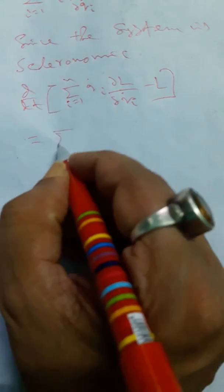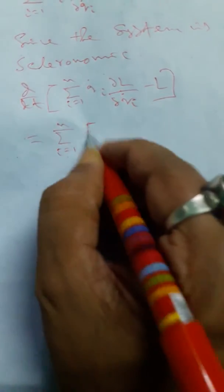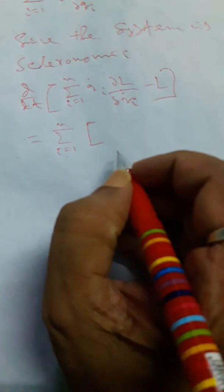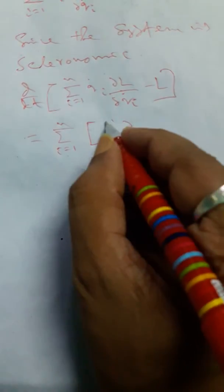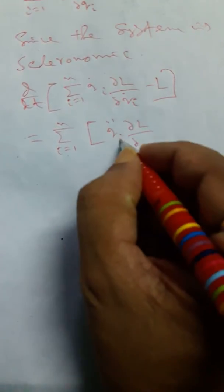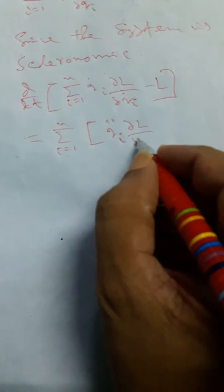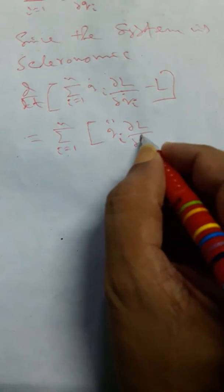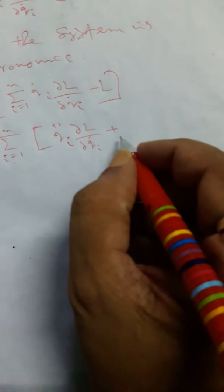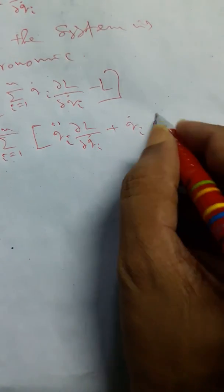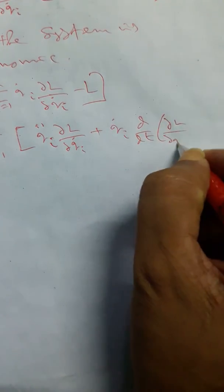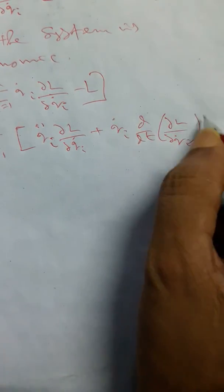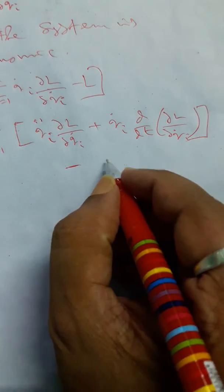We get summation from i equals 1 to n of q-double-dot-i times (∂L/∂q-dot-i), plus q-dot-i times d/dt(∂L/∂q-dot-i), minus dL/dt. And it is obvious that for the Lagrangian function, dL/dt can be expanded as summation of (∂L/∂q-dot-i) times q-double-dot-i plus (∂L/∂q-i) times q-dot-i.